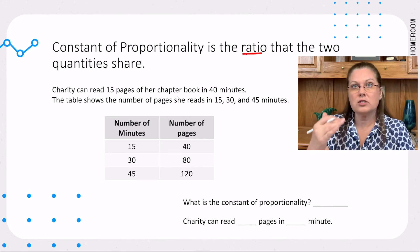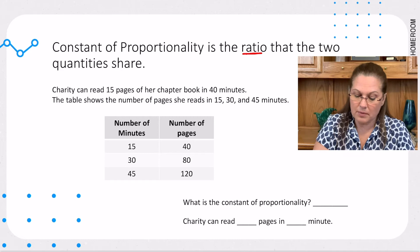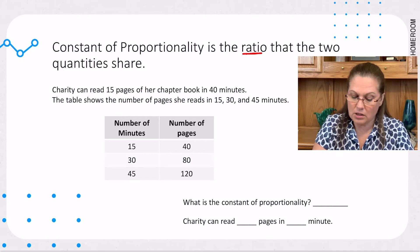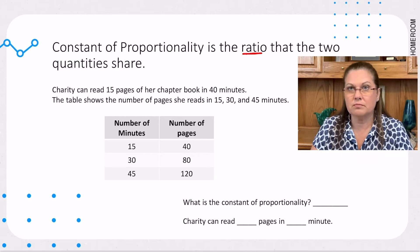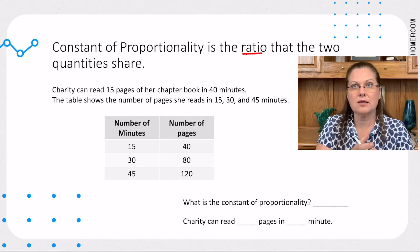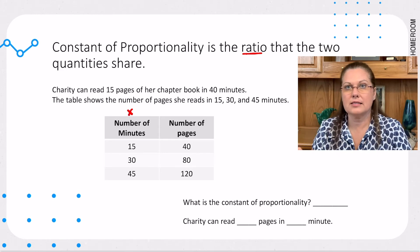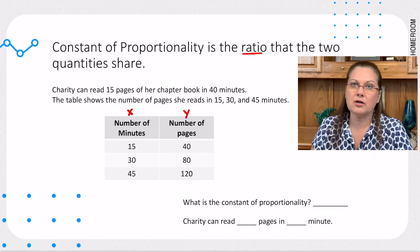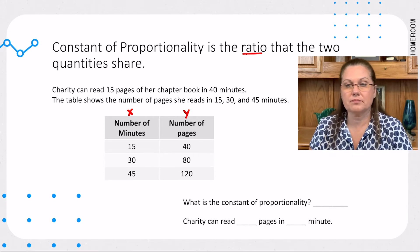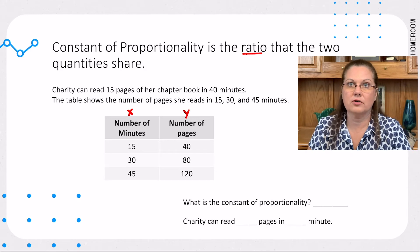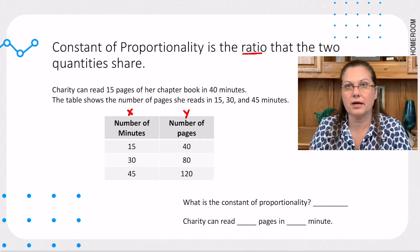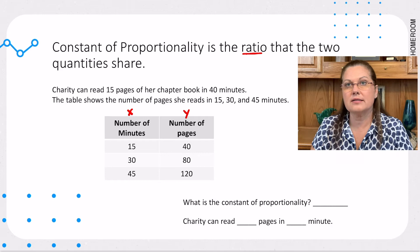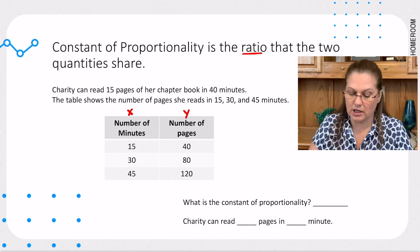Remember, we're going to look at our rate of change between our x value and our y value. And remember, the left side of the table is our x, the right side of our table is our y. It really doesn't matter which vertical column you compare first, as long as they all have the same rate of change. So, I'm going to go ahead and do my x value first.